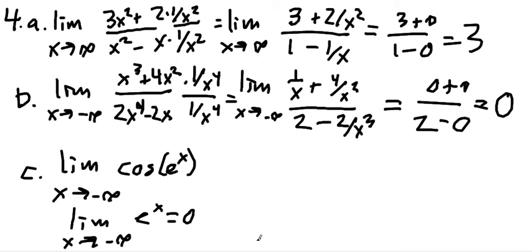It has a horizontal asymptote at y equal to zero that it gets closer to as x goes to negative infinity. So this goes to cosine of zero and cosine of zero is equal to one.